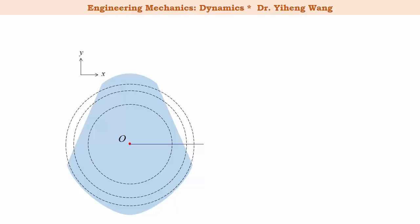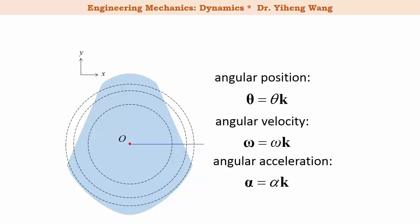For rigid body planar motion, since rotation is limited within the x-y plane, as Cartesian vectors, angular position, angular velocity, and angular acceleration all have a component of k, which is the unit vector of the z-axis perpendicular to the x-y plane. Similar to the sign convention of moment, positive angular motion indicates counterclockwise rotation and negative motion indicates clockwise rotation.